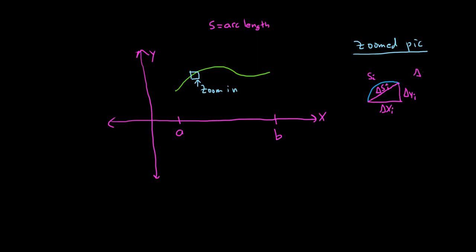So delta s sub i is an approximation for s sub i. We can use the ancient theorem of Pythagoras now, which tells us that if you have delta s sub i squared, that's equal to delta x sub i squared plus delta y sub i squared. Taking the square root of both sides, only keeping the positive one because this is a length, we have delta s sub i, and that's equal to the square root of all of the stuff here. So we have delta x sub i squared plus delta y sub i squared.